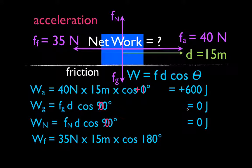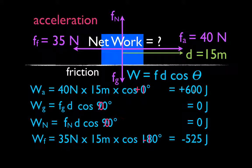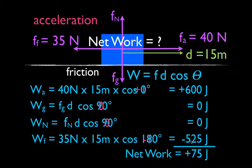The friction force: 35 newtons, 15 meters. The angle between the direction of motion and the friction force is 180 degrees — those vectors are parallel but pointing in opposite directions. The cosine of 180 is minus one, and that means the friction force does minus 525 joules of work. Think of it as: the applied force does positive work and puts energy in; the friction force acts opposite the motion and takes energy out. The net work done on the object, adding all of those up, is 75 joules.